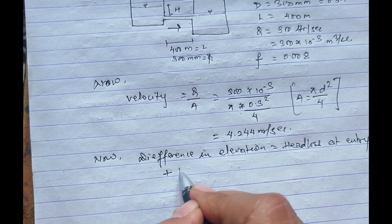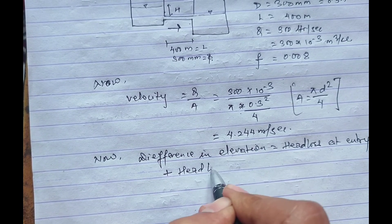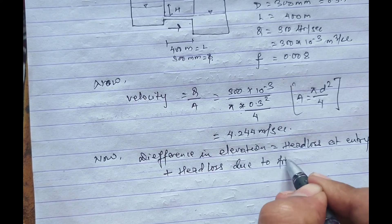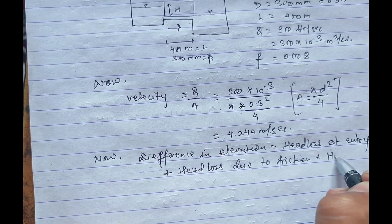So difference in elevation equals head loss at entry plus head loss due to friction plus head loss at exit.